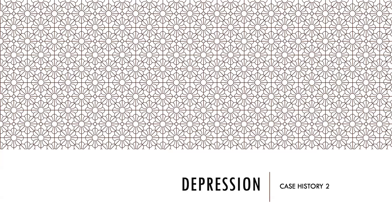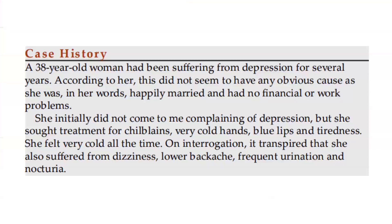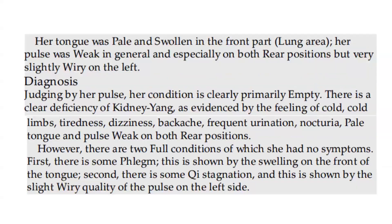Case history on depression. A 38-year-old woman had been suffering from depression for several years, which did not seem to have any obvious cause, as she was happily married with no financial or work problems. She initially sought treatment for chilblains, very cold hands, blue lips, and tiredness - she felt very cold all the time. On interrogation, it also transpired that she suffered from dizziness, lower back aches, frequent urination, and nocturia. Her tongue was pale and swollen in the front part (the lung area). Her pulse was weak in general and especially on both rear positions, but very slightly wiry on the left.